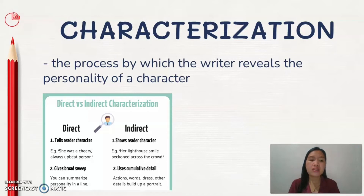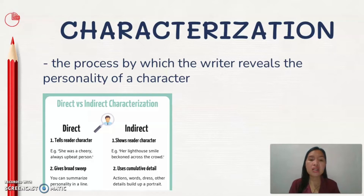For example, in direct characterization the author would simply say, 'the child was so dirty.' That's a very direct summary of the character in just one line. But in indirect characterization, the author would instead describe how the child dresses up, the child's actions, and the child's words — giving the reader the idea that the child is dirty. So that is an example of characterization.